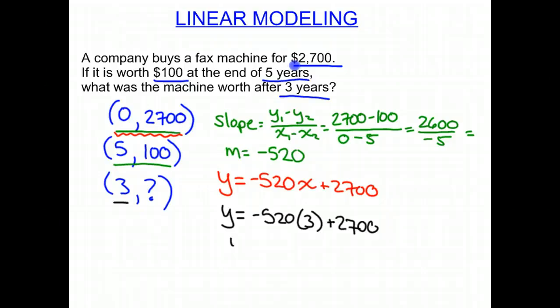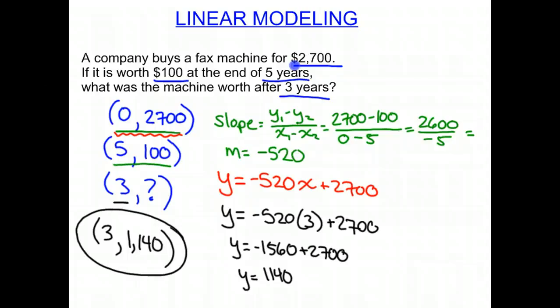So then we multiply, y equals negative 1,560, plus 2,700. We simplify this, and we get 1,140. So our answer, when x is 3, y will be $1,140. That's our answer.